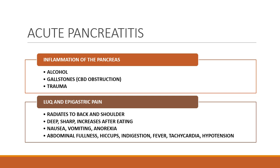The pain often radiates to the back and up to the shoulder. The person experiences deep, sharp pain that increases after eating. Nausea, vomiting, anorexia, abdominal fullness, hiccups, indigestion, fever, tachycardia, and hypotension are common. Keep in mind that the pancreas is close to the diaphragm, so inflammation can trigger the phrenic nerve, causing hiccups and pain radiating through the diaphragm to the back and up to the left shoulder. When you consider the anatomy and physiology of the location, the radiation of pain just makes sense.